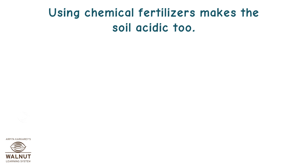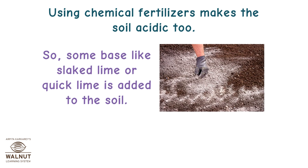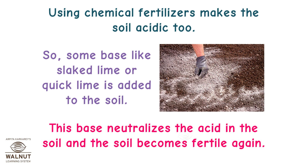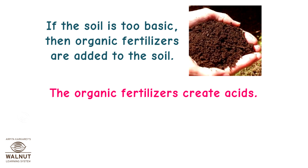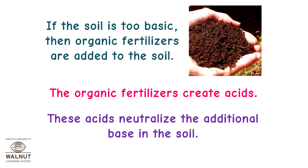Using chemical fertilizers makes the soil acidic, so a base like slaked lime or quick lime is added to the soil. This base neutralizes the acid in the soil and the soil becomes fertile again. If the soil is too basic, organic fertilizers are added, which create acids that neutralize the additional base in the soil.